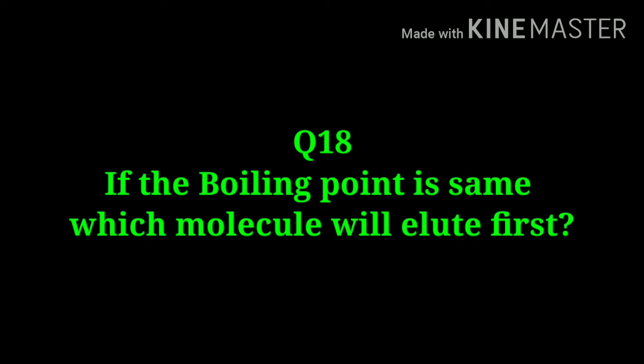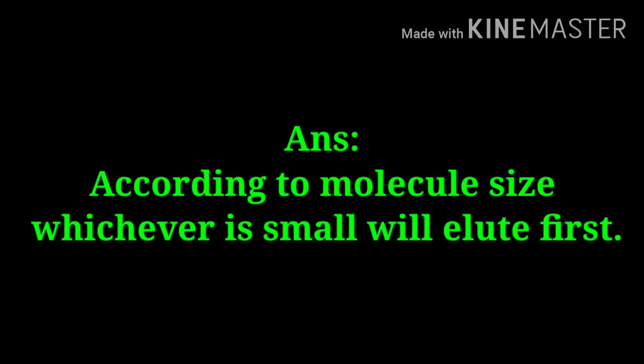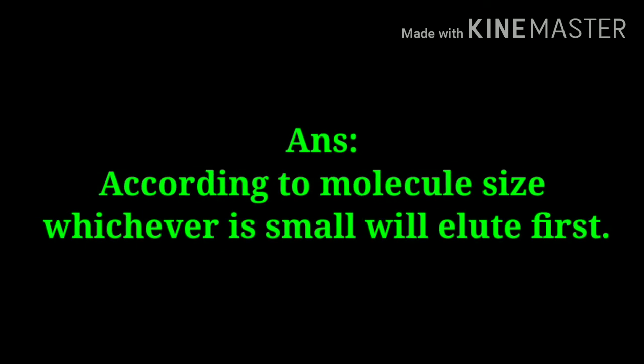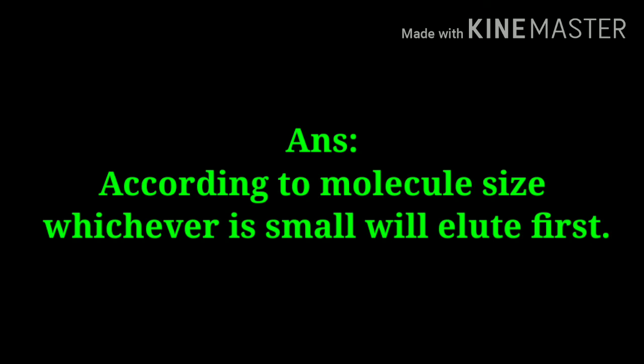If the boiling point is the same, which molecule will elute first? According to molecular size, the smaller molecule will elute first because it has less molecular size and will pass through faster. Molecules with larger size will come out later.